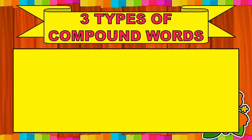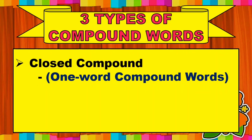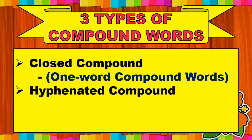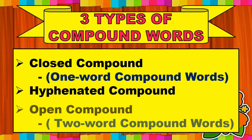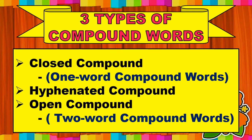There are three types of compound words: closed compound, or the one-word compound words; hyphenated compound; and open compound, or the two-word compound words.